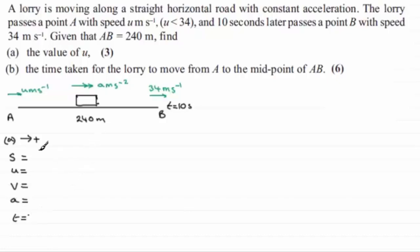Now, we know the displacement from A to B. In the positive sense, it's 240 meters. U, well that's the initial velocity, we're trying to find it. V, the final velocity, that's 34. And the acceleration, we don't know that. And the time taken to get from A to B is 10 seconds.